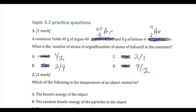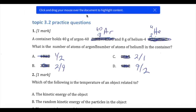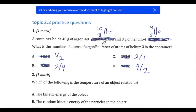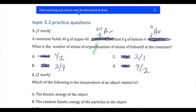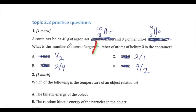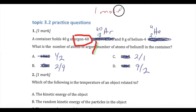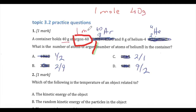This video covers the multiple choice questions. Starting with number one: this question asks for the ratio of the number of atoms in argon divided by the number of atoms in helium. When you see the notation argon-40, that means one mole of argon has 40 grams. The question gives you 40 grams of it, so that is clearly one mole of argon.